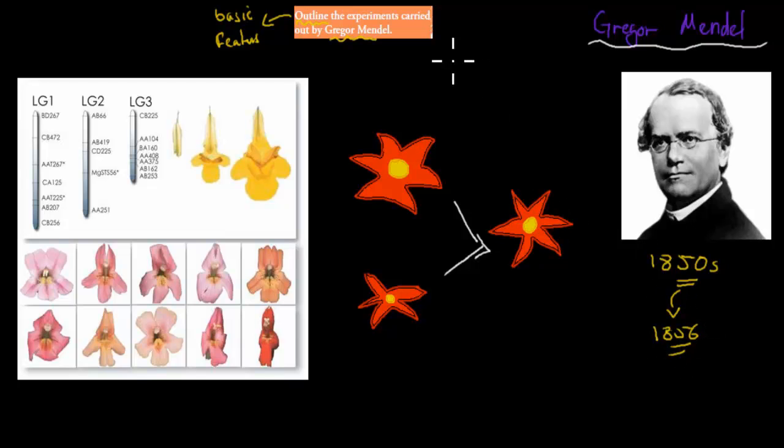Now he actually tested how inheritance works. Inheritance is just how you pass your traits from your mother or father to your child. When he lived in the 1850s, people believed in the idea of blending. What blending was, people believed that if this were the mother plant and this were the father plant, the actual offspring would have the traits of the mother and the father, but they'd be blended in between the two.